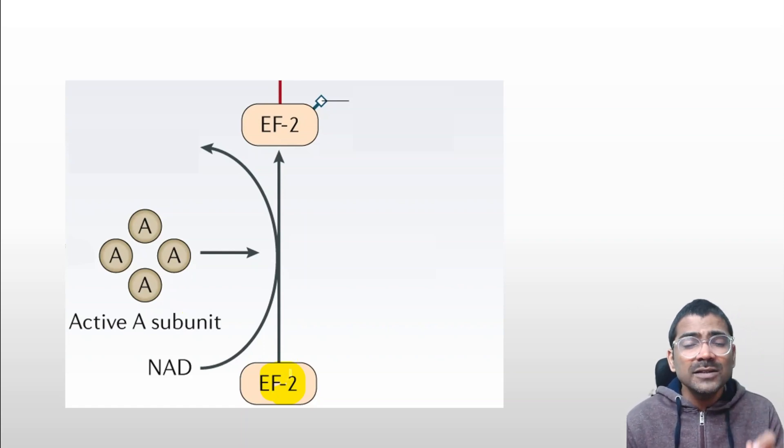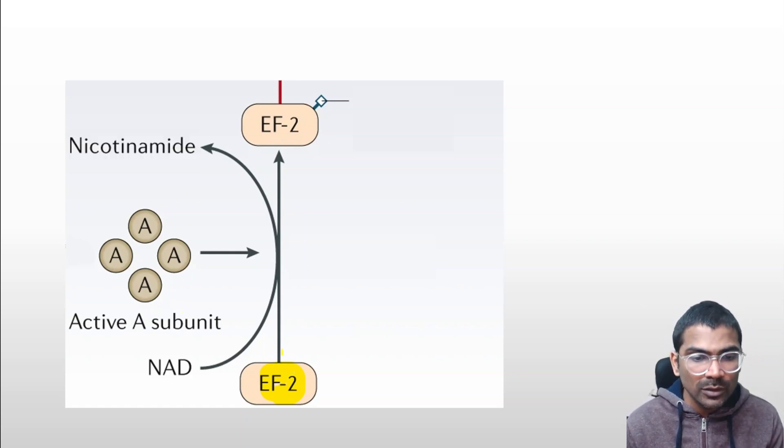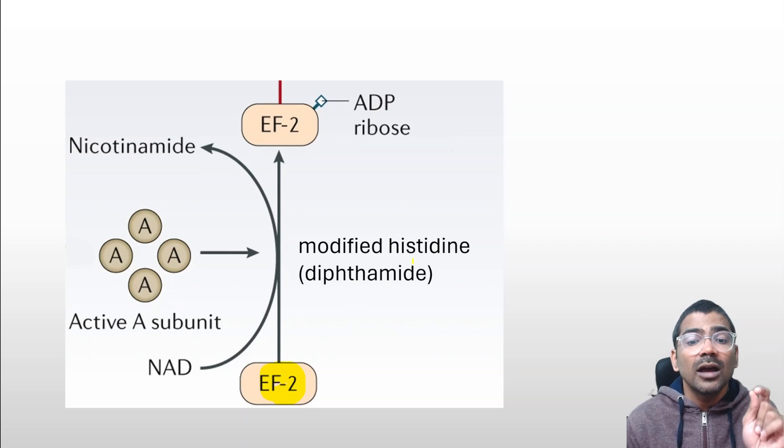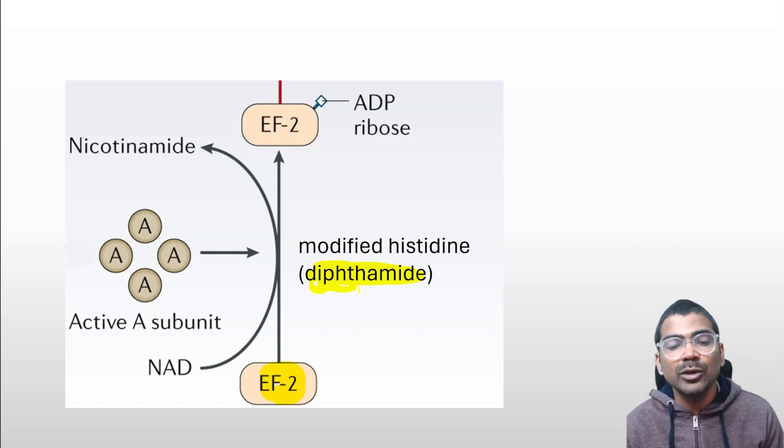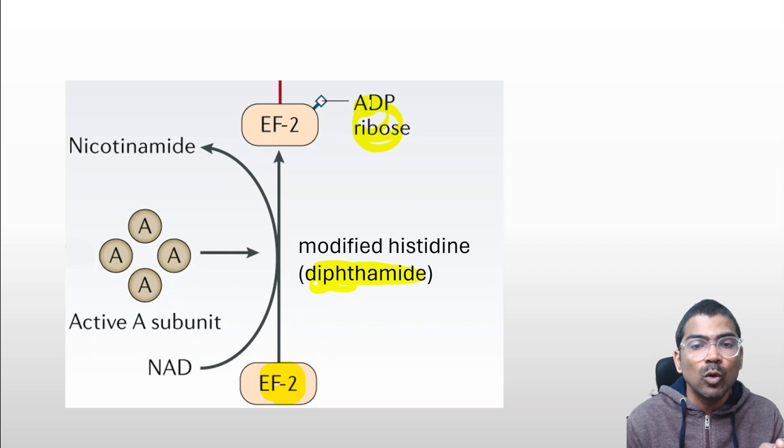The catalysis involves a peculiar amino acid of EF2, a modified histidine known as diphthamide. The catalytic subunit adds ADP-ribose from NAD.